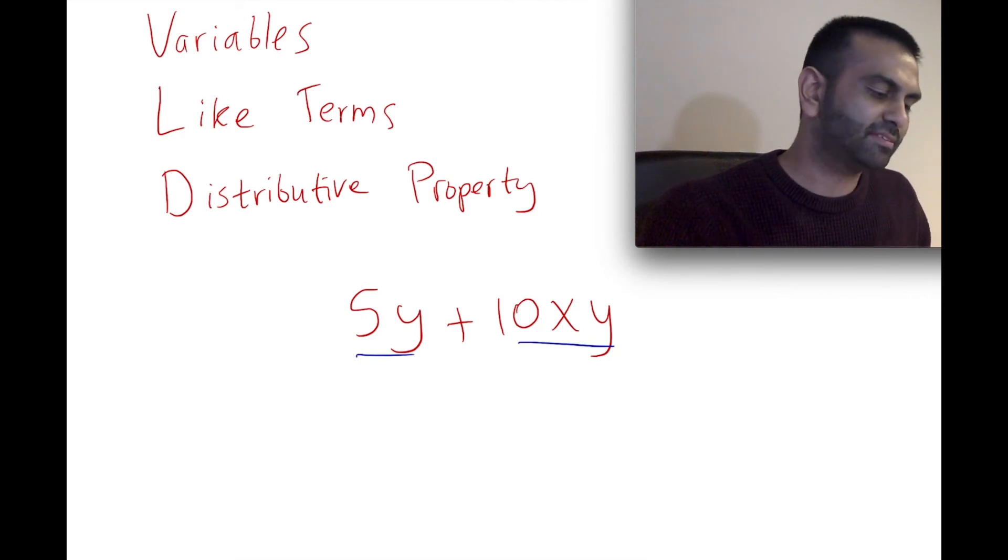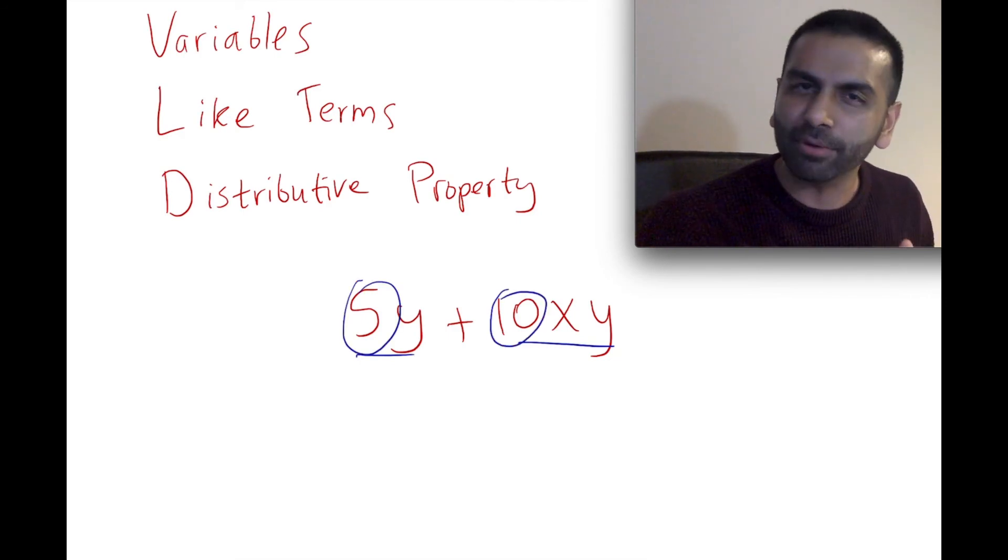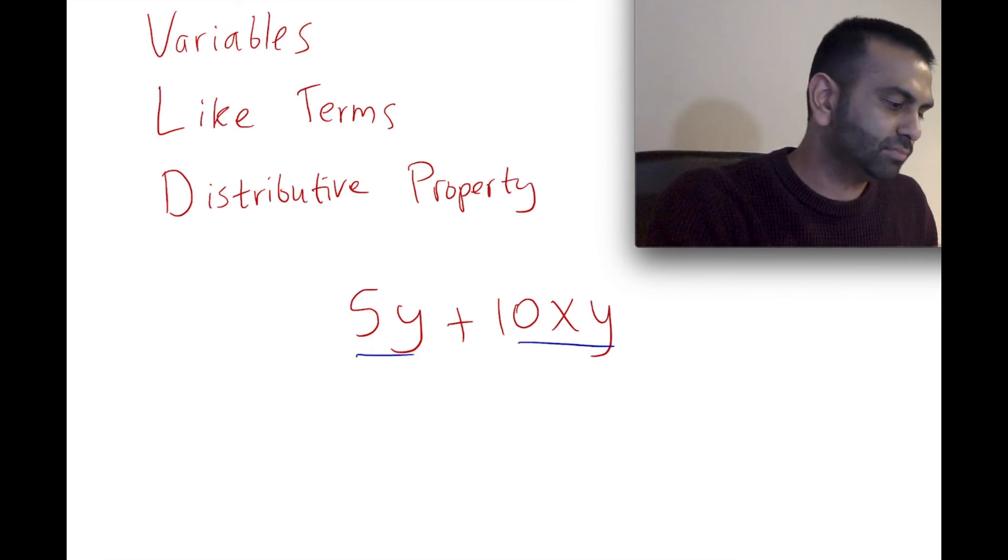It's sort of like saying, what number goes into or is divisible by both of these? Here, 5 goes into both of these, so if we were to take a 5 out in common between them...